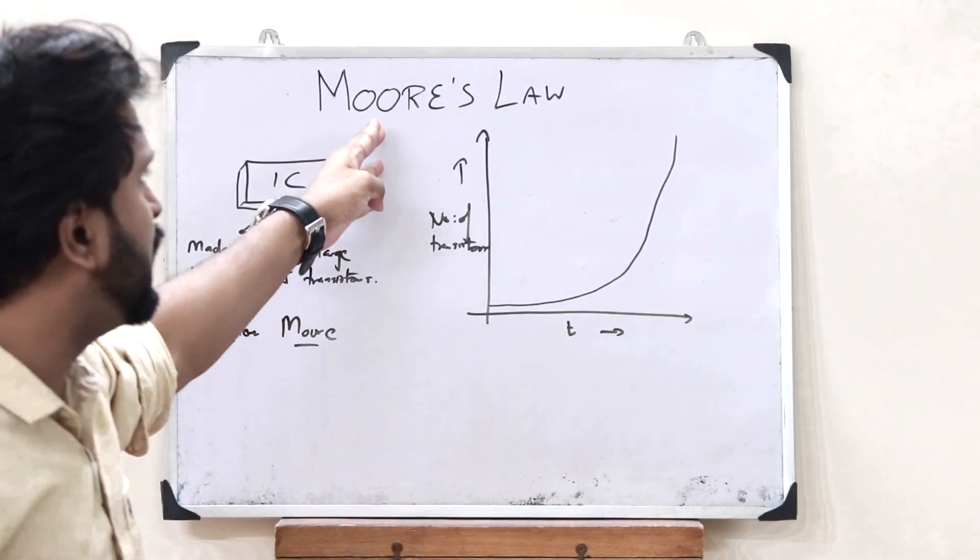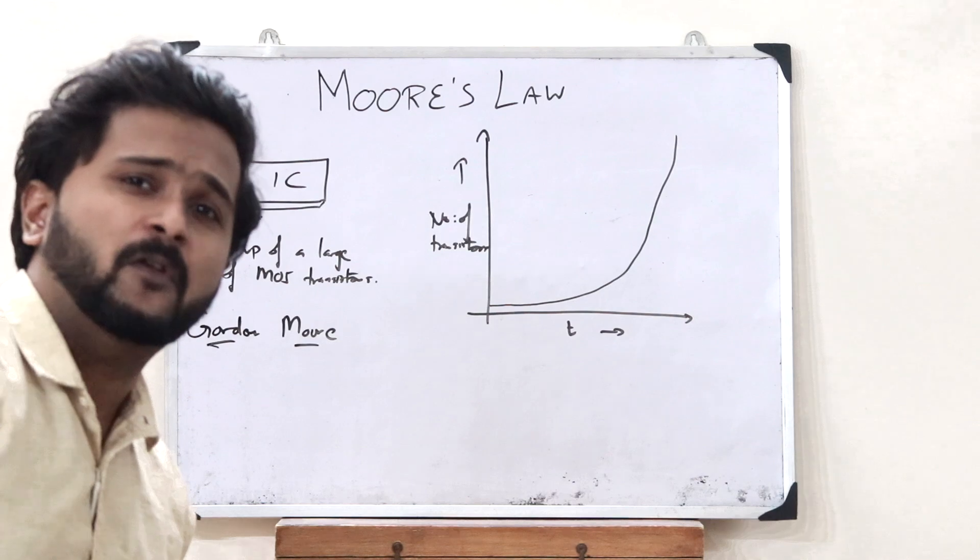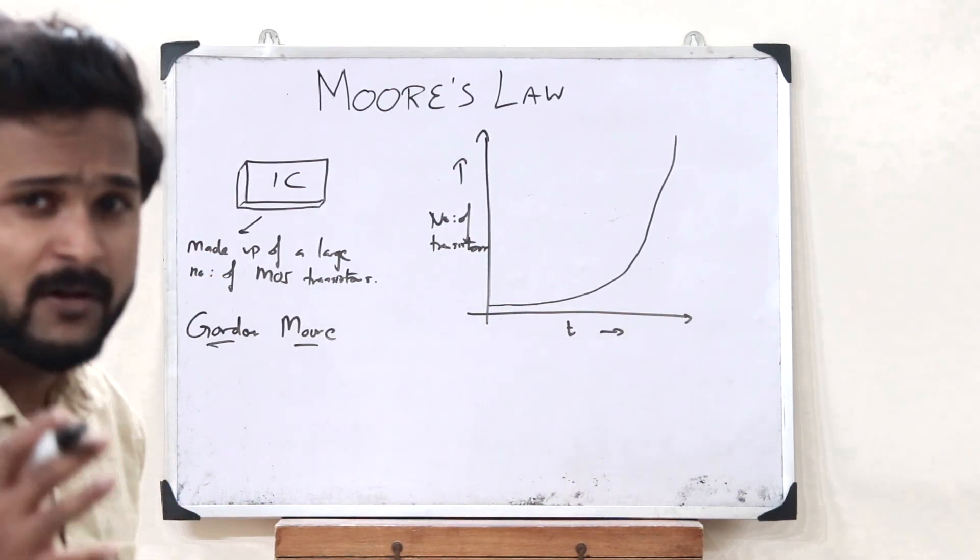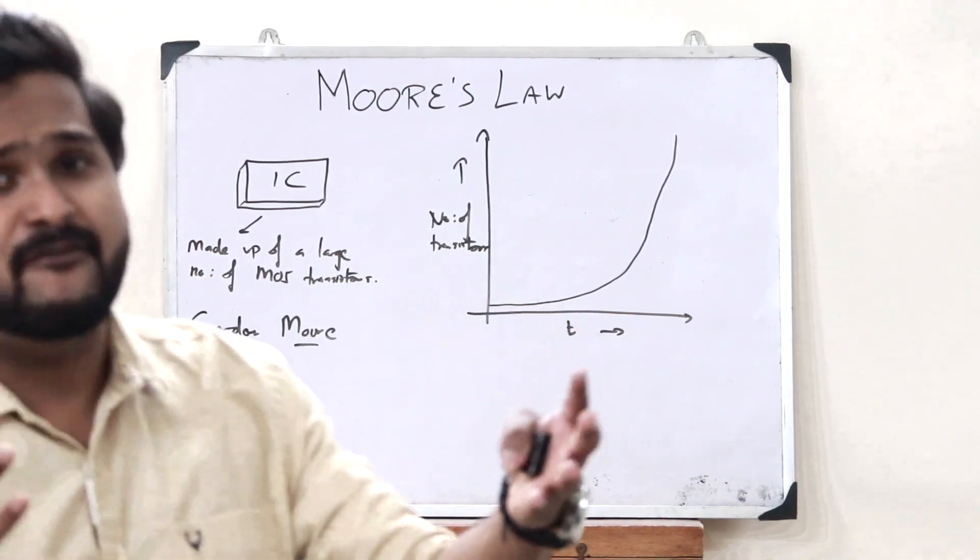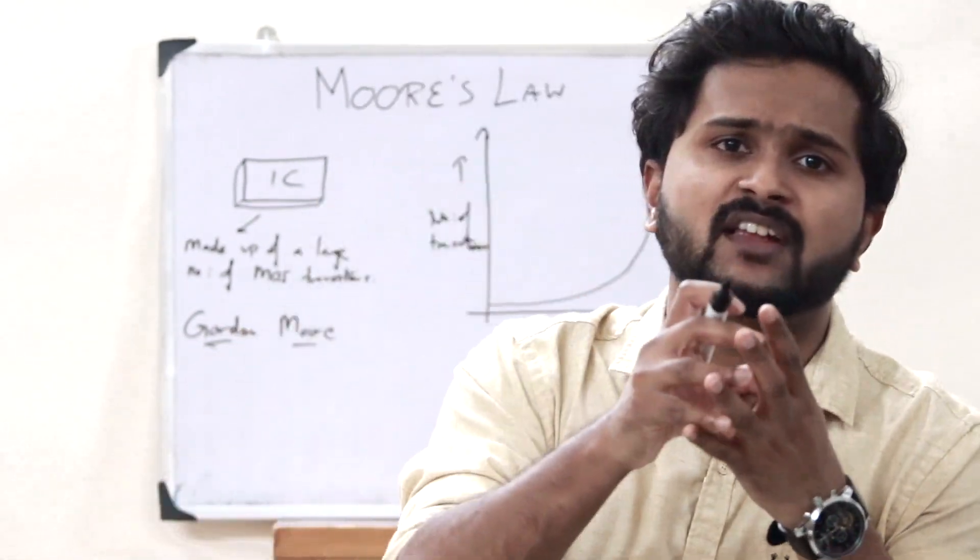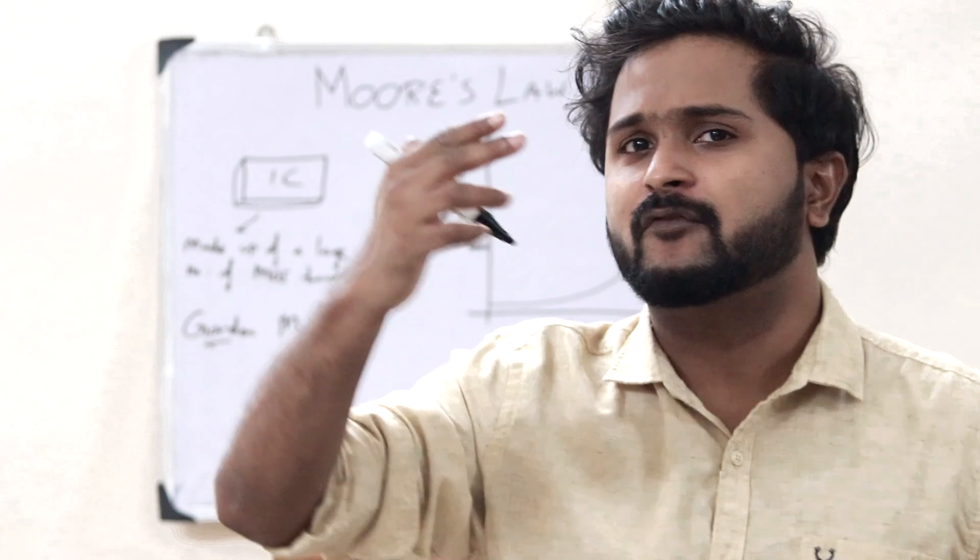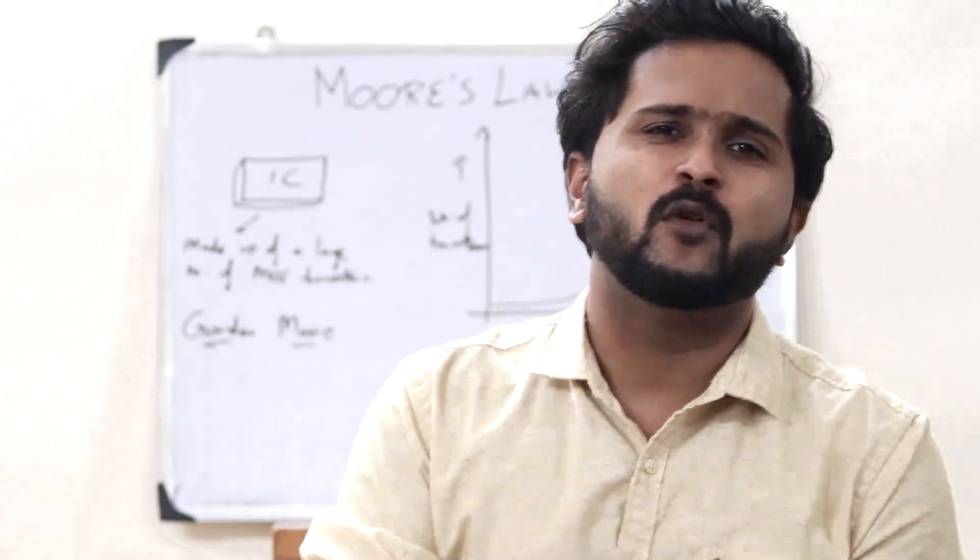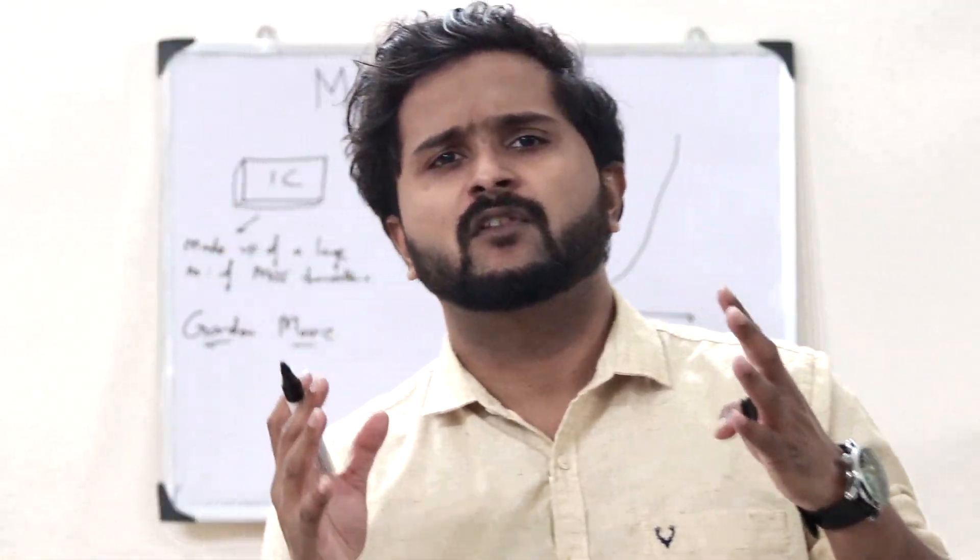This is what you refer to as Moore's Law. Gordon Moore stated that with every two years, the number of transistors present inside an IC would be double the previous value.